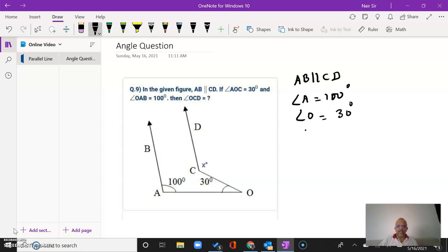I need to find angle x. This is the question. The first thing I will do whenever I see this kind of drawing - I know AB is parallel to CD, so I will just extend this particular line.